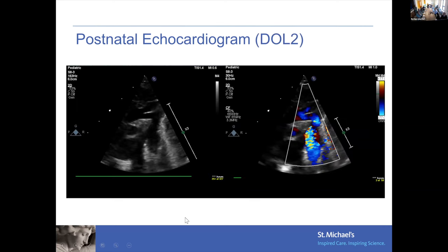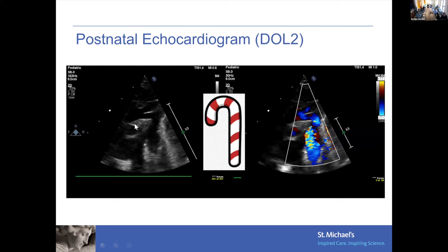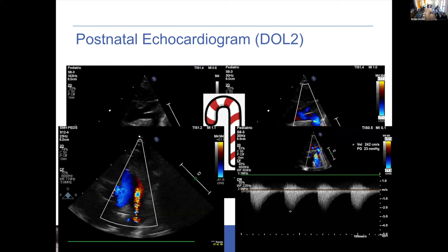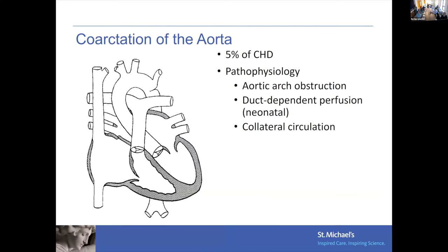Here is the assessment of the aortic arch. You can see the same candy-cane shape that looks wide open, with a bit of flow acceleration at the aortic isthmus, but the gradient is not very high at 23. There's a patent ductus arteriosus (PDA) that's open, shunting from the descending aorta to the main pulmonary artery. The aortic arch appears unobstructed in the context of an open ductus arteriosus.